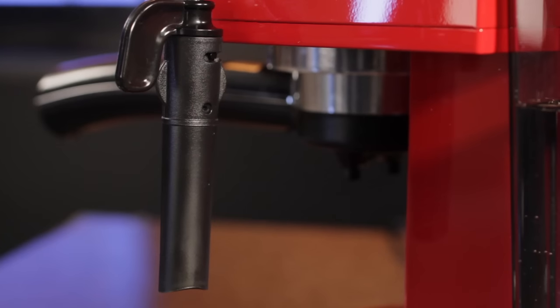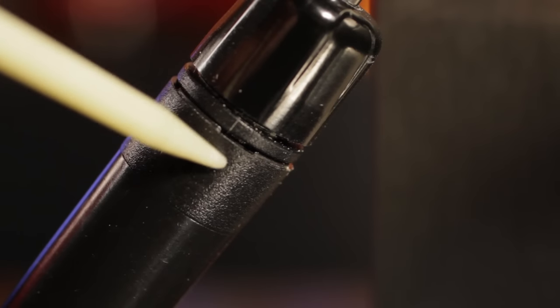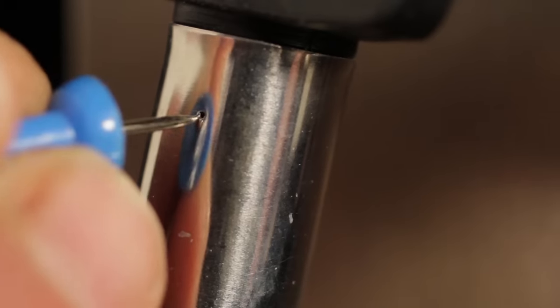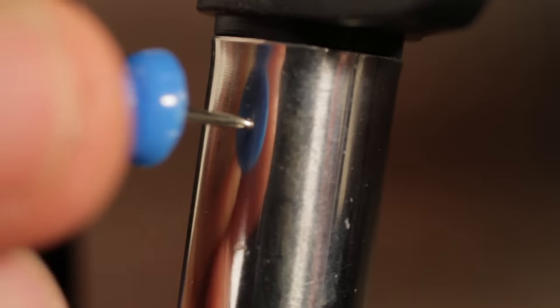a larger hole like on this delonghi wand, or slots near the top like on this one. Milk blockages at the air intake or inside the wand will cause poor performance, so be sure to thoroughly clean the wand after use. If needed, you can use a pin to clear milk residue on small air intakes like this one.